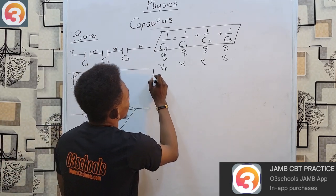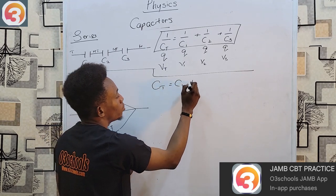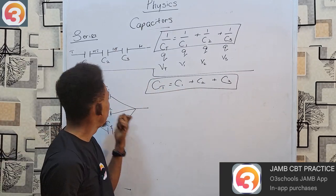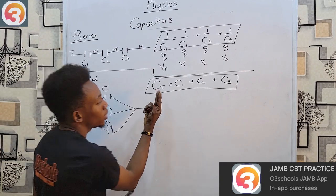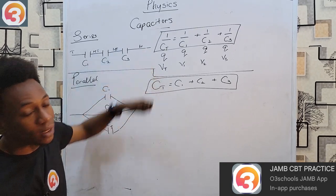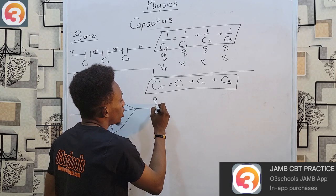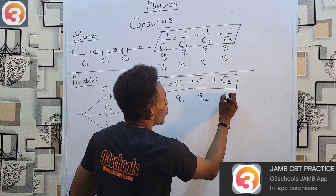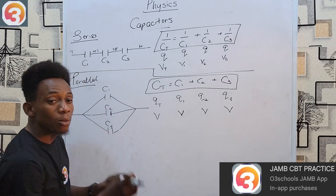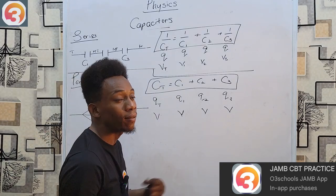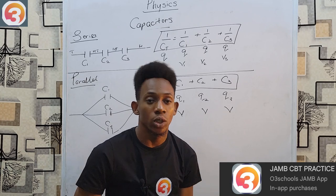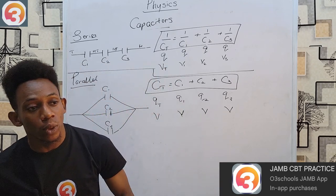For a parallel connection, the total capacitance C_T = C₁ + C₂ + C₃, and so on. If you have capacitors in parallel, simply add each individual capacitance. This is the opposite of series: in parallel, the charge gets shared among the capacitors while the voltage is the same for all of them.